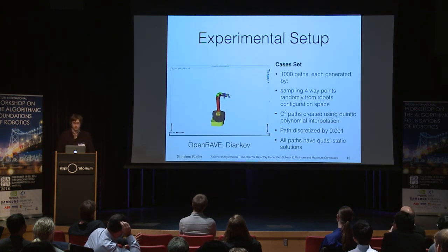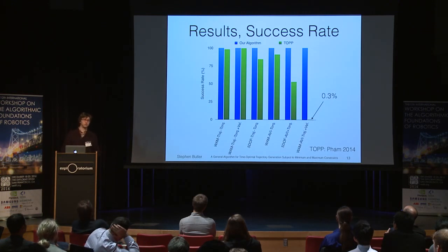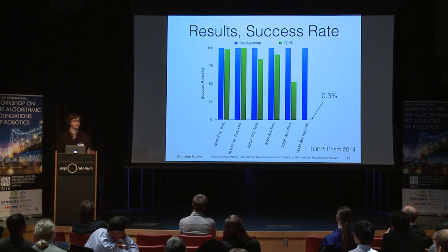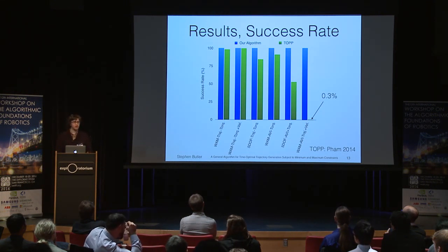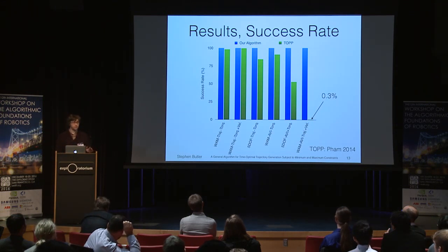To test our algorithms, we generated 1,000 paths. Each was generated by sampling four waypoints randomly from the robot's configuration space. C2 paths were created using quintic polynomial interpolation and discretized finely to 1,000 points. All paths have quasi-static solutions — this is important because if the algorithm returns that no solution exists, we know it's a failure of the algorithm. Trajectories that violate constraints are also counted against the success rate. Comparing with TOP, that library shows high variation depending on the arm used, whether computing trajectories or admissible velocity intervals, and the constraints. With our algorithm, we achieve 100% success across the board.